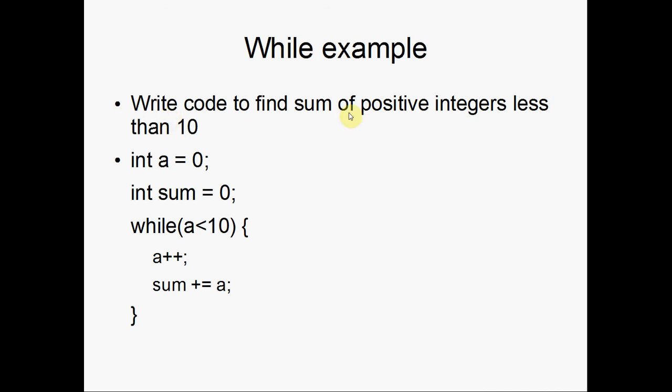This code will add up the first 10 integers from 0 to 10. We have int a equals 0 and sum equals 0, so we can initialize both those. And while a is less than 10, you increment a and you add the sum.